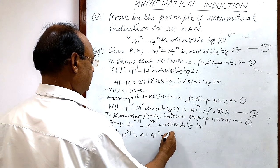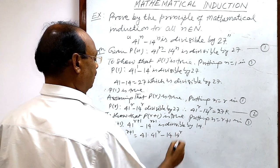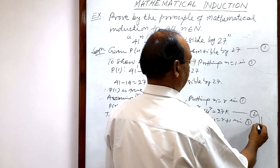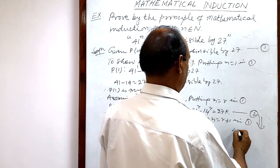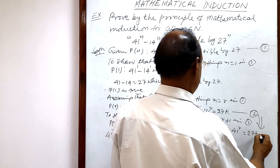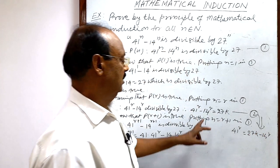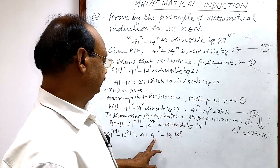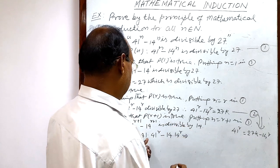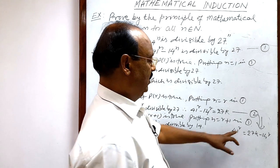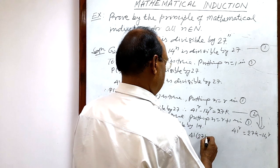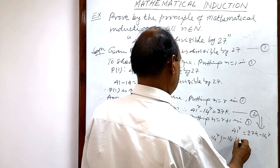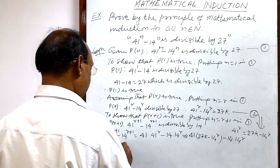From relation number two, we write 41 to the power r as 27k plus 14 to the power r, by transposing the 14^r term to the right-hand side. Now putting the value of 41^r here, we get: 41 times (27k + 14^r) minus 14 into 14^r.